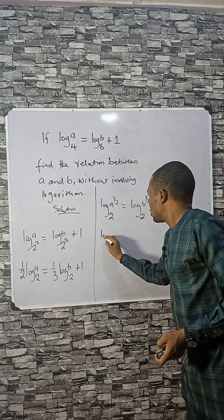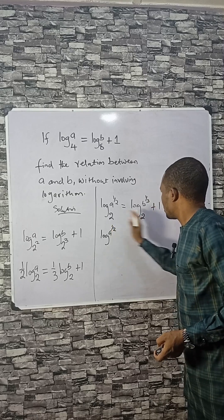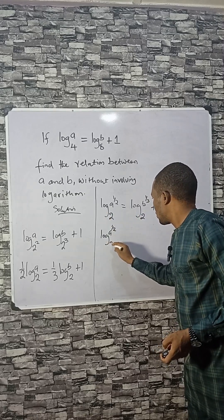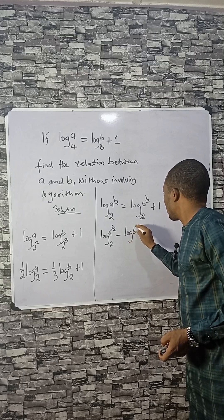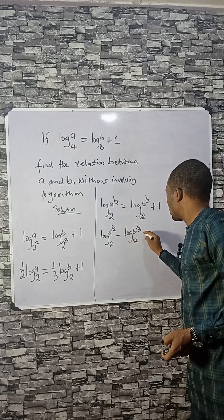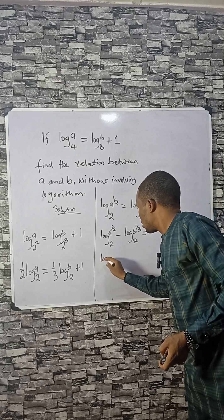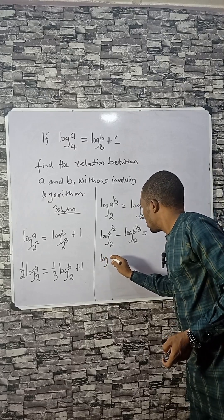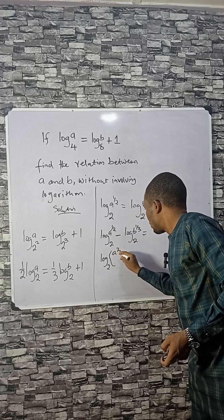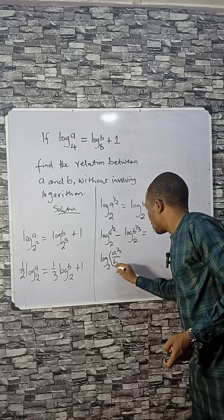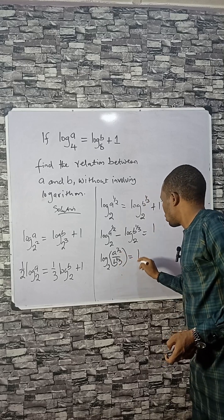If we subtract, taking the log B^(1/3) base 2 to the other side, we get log of (A^(1/2) divided by B^(1/3)) base 2 equals 1. Using the division law of logarithms, this gives us A^(1/2) divided by B^(1/3) equals 2 raised to the power of 1.